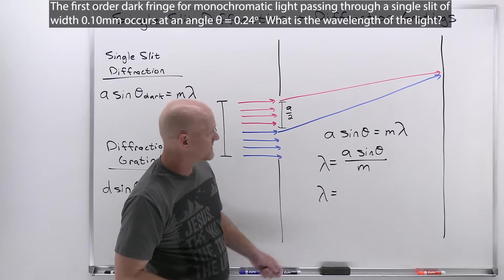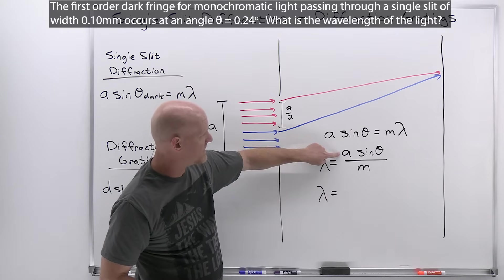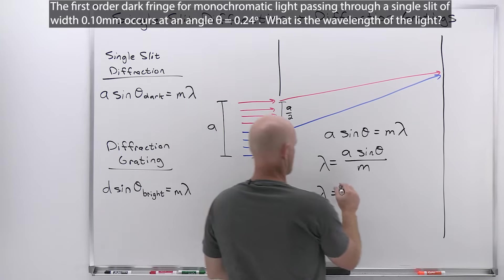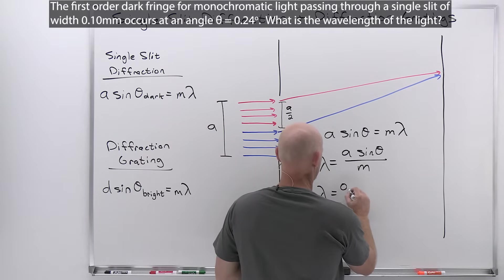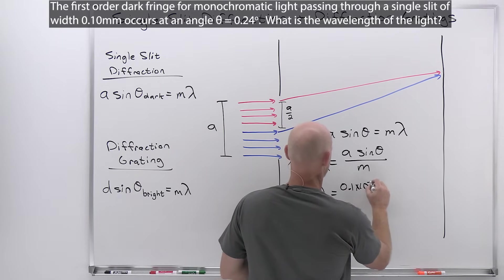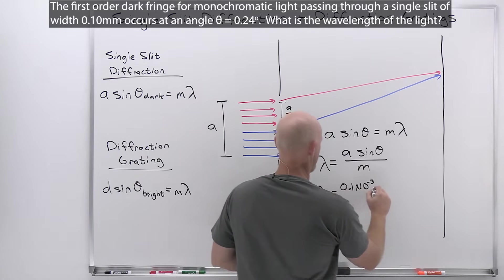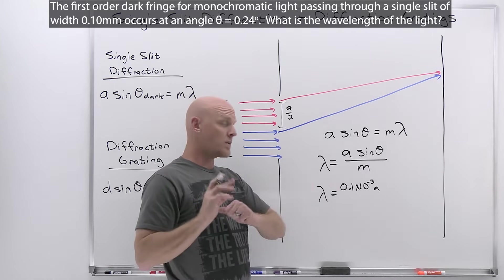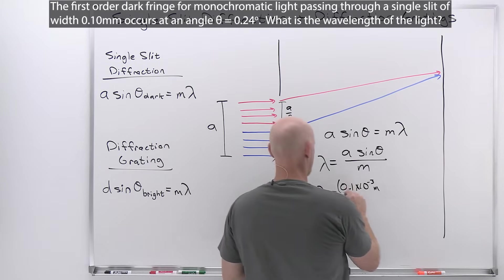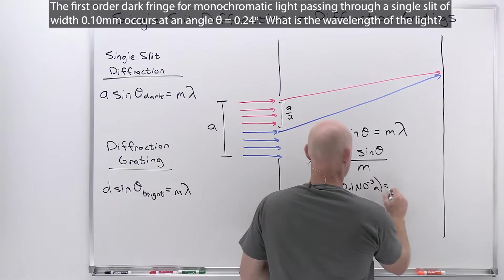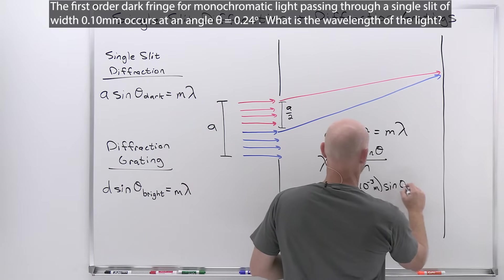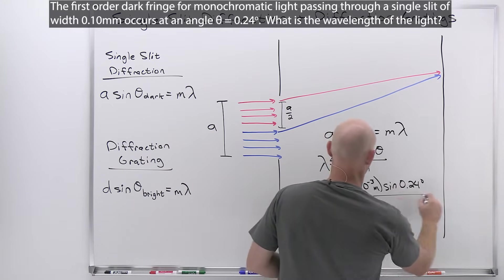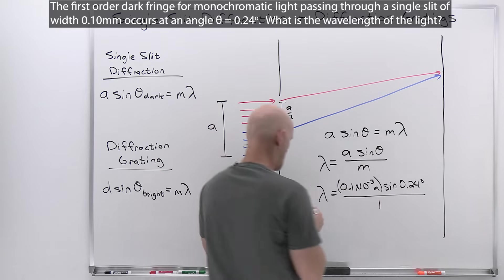Making sure our units are correct: A is 0.1 millimeters, which in meters is 0.1 times 10 to the negative 3. That's not proper SI notation, but that's how I'll plug it into the calculator — times the sine of 0.24 degrees, all over 1.